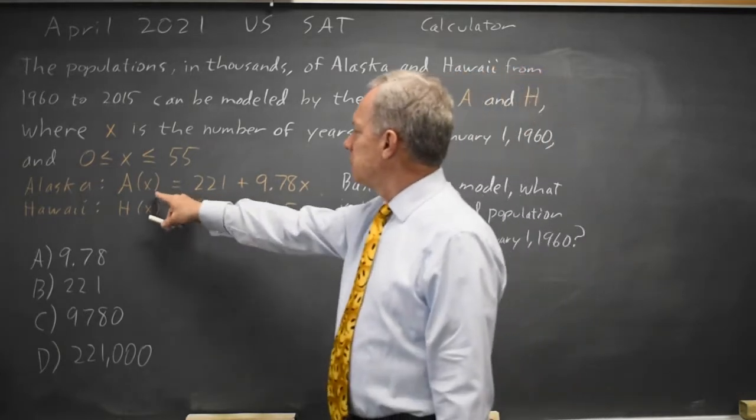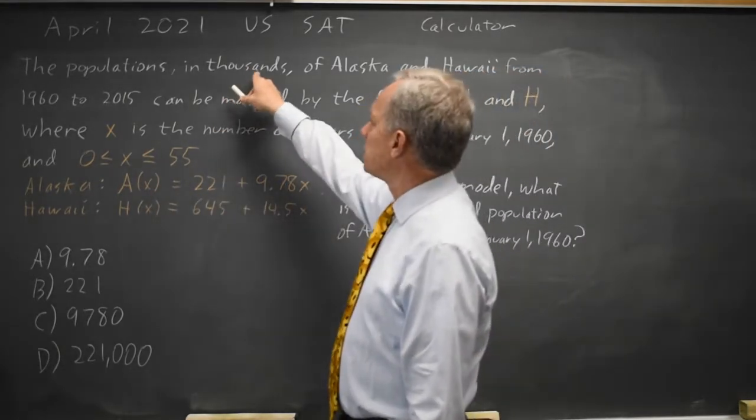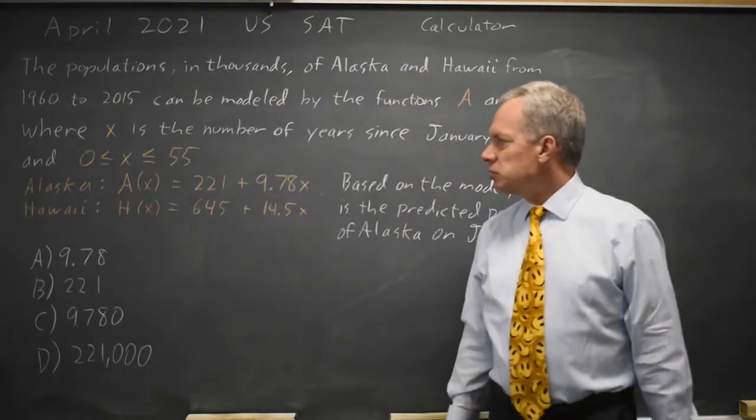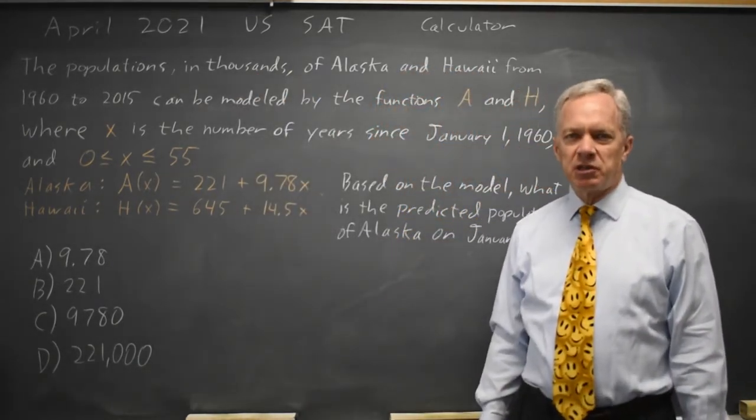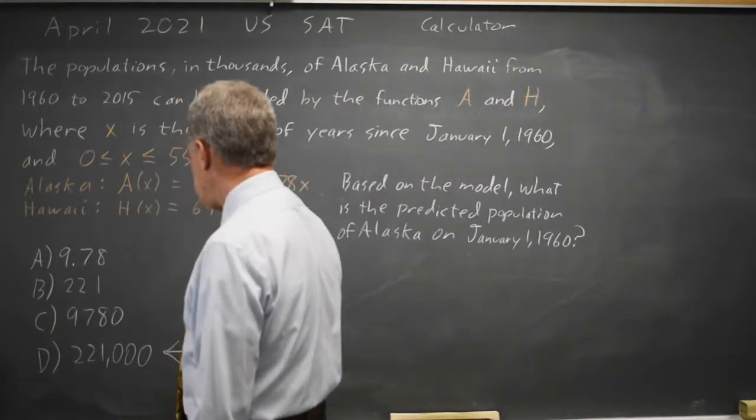And A of 0 is 221, where A of X gives the population in thousands of Alaska. So 221,000 would be the population when X equals 0. That is choice D.